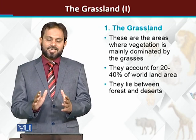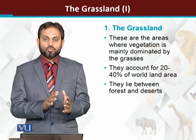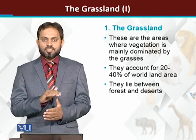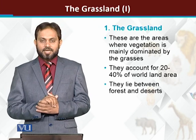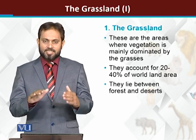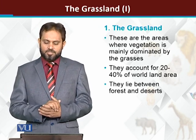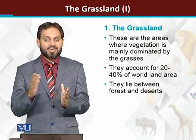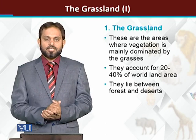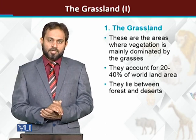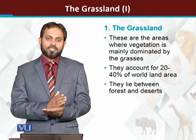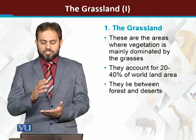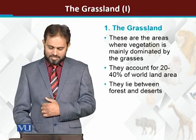Grasslands account for twenty to forty percent of total world land area. دنیا کی land area کے اوپر twenty سے forty percent تک grasslands present ہیں۔ Normally grasslands desert اور forest کے درمیان کا biome ہوتا ہے — desert کی conditions سے less severe ہوگا، اور forest کے لیے less ideal conditions ہمارے پاس grassland ecosystems کے اندر موجود ہیں۔